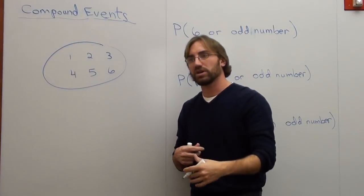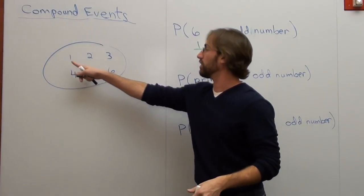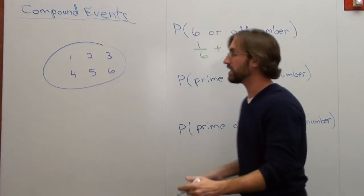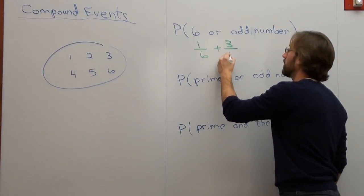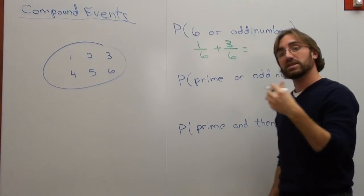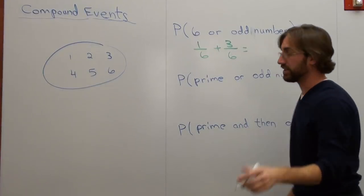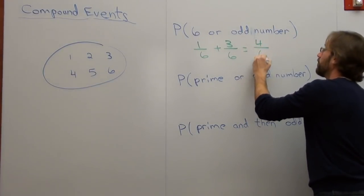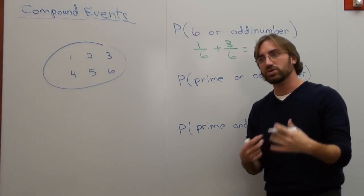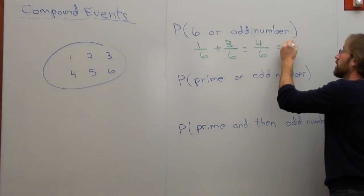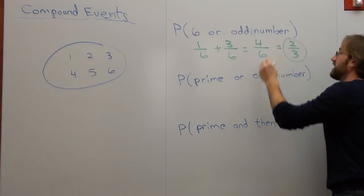Now what are the chances or the likelihood that you're going to roll an odd number? Well, there's 1, 2, 3 out of 6. 1/6 plus 3/6 is 4/6. When you reduce 4/6, it comes out to 2/3. And that's the answer.